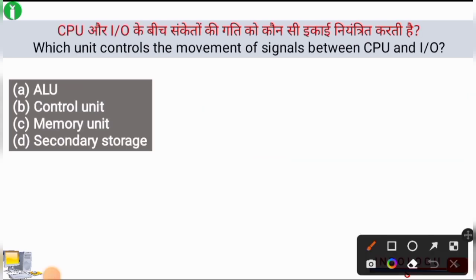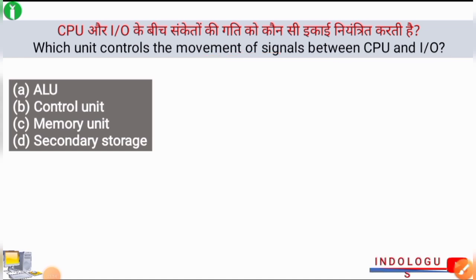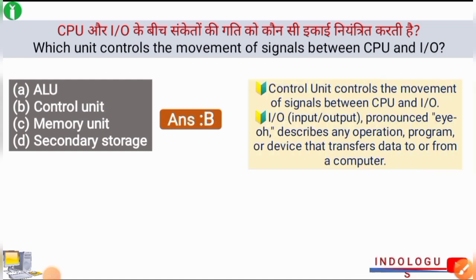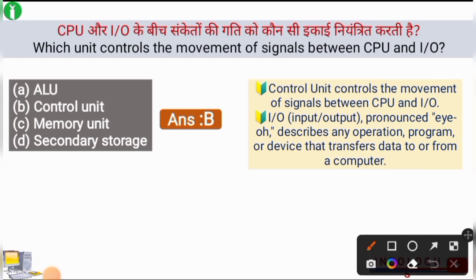Next question: Which unit controls the movement of signals between CPU and I/O? The right answer is option B, control unit. The control unit mainly controls the movement of signals between the CPU and I/O, where I/O means input and output. I/O describes any operation, program, or device that transfers data to or from a computer.